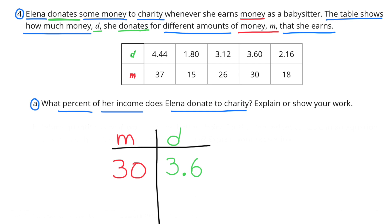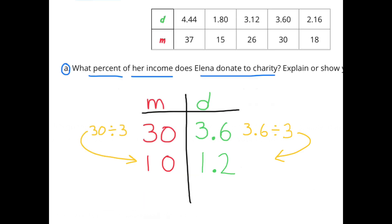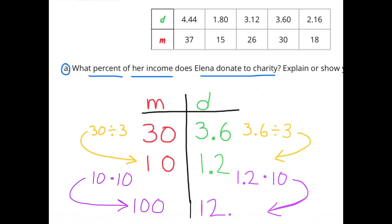I selected $30 of money earned and $3.60 donated. I chose these numbers because I can easily turn $30 into $10 by dividing by 3, and then multiply by 10 to make it $100. I do the same to the other side: $3.60 divided by 3 equals $1.20. So when she earns $10, she donates $1.20. Multiply the dollar side by 10 and you get $100 — for every $100 she earns, she donates $12, because $1.20 times 10 is $12. She donates 12% of her income to charity.